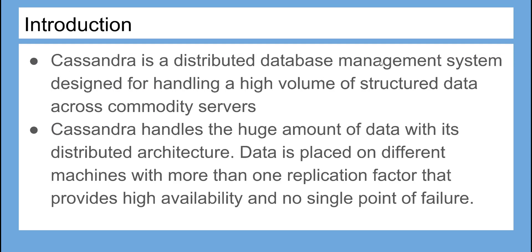Cassandra is a distributed database management system designed for handling a high volume of structured data across commodity servers. Cassandra handles the huge amount of data with its distributed architecture. Data is placed on different machines with more than one replication factor that provides high availability and no single point of failure.